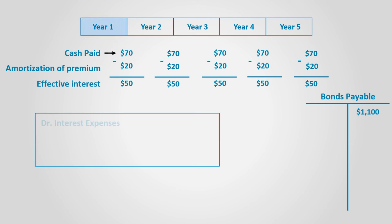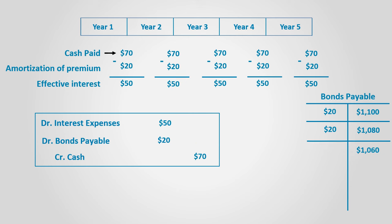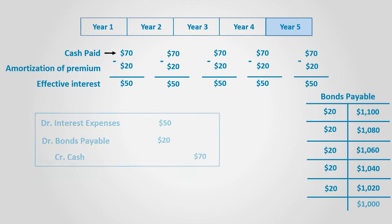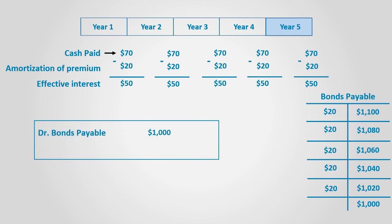The journal entry would be: debit interest expense for $50, debit bonds payable for $20, and credit cash for $70. Now the balance of bonds payable is $1,080. After the second year, the same entry is done again, and the balance of bonds payable is $1,060. And so on until the fifth year, where the balance of bonds payable is $1,000. When it is paid to the bondholder, the following entry is done: debit bonds payable for $1,000 and credit cash for the same amount.